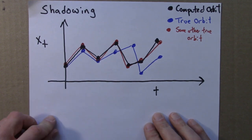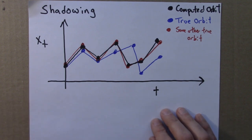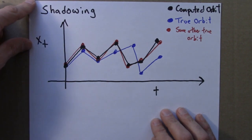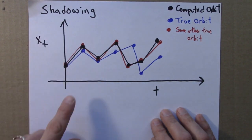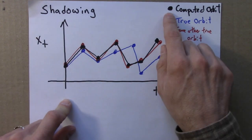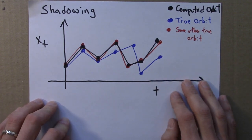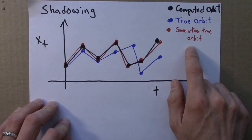A lemma in mathematics is a result that's used as an intermediate step to prove or demonstrate some other central or more important result. In any event, this is a pretty famous result known as the shadowing lemma, and the phenomenon is called shadowing. Shadowing is when a computed orbit, which is in a sense wrong due to the butterfly effect and finite precision, nevertheless comes arbitrarily close to some other true orbit. Shadowing is a strange phenomenon and it's fun and interesting to think about.